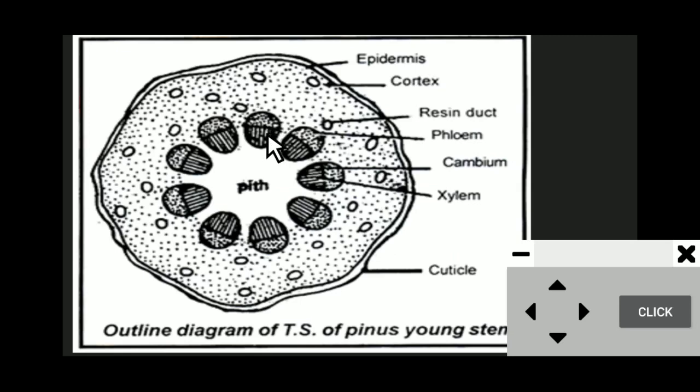Open condition means there is cambium present between the xylem and phloem. The xylem is endarch — that is, protoxylem is present towards the pith and metaxylem is present away from the pith. The xylem is divided into protoxylem and metaxylem.